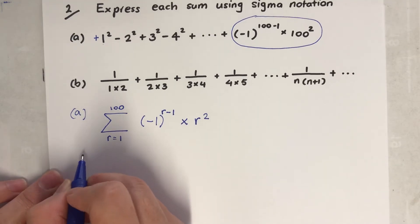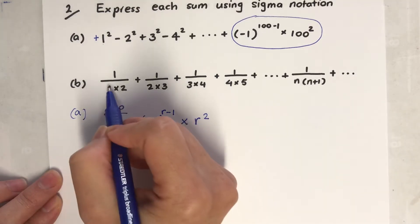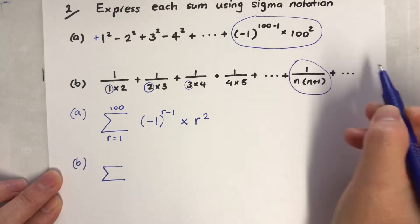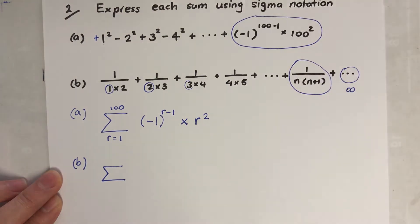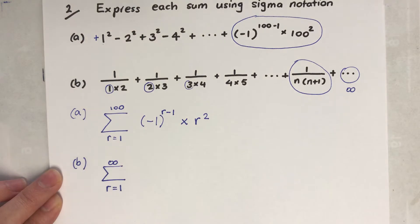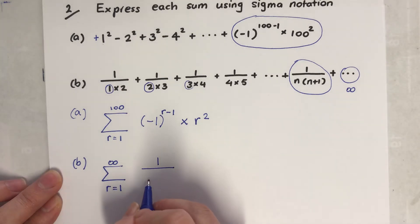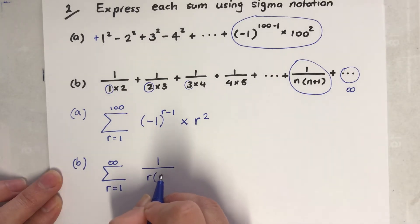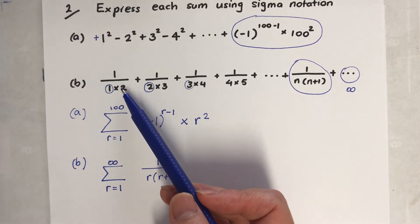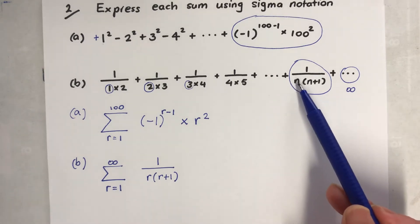Second one - it starts with 1, 2, 3, 4 and goes to infinity, so I'm going to write r equals 1 up to infinity. The formula is r over (r plus 1), and that makes sense because the number next to it is always one more than the previous one. So the sigma notation is the sum of r over (r plus 1).